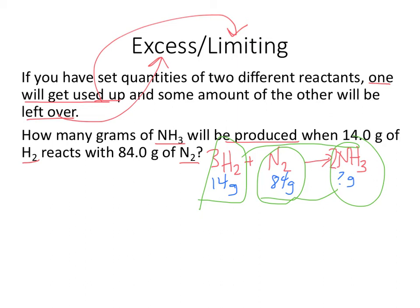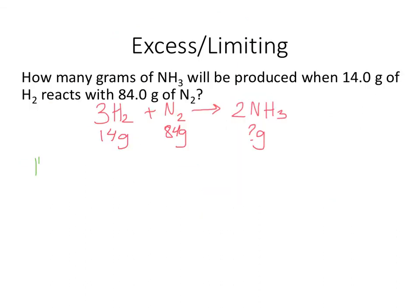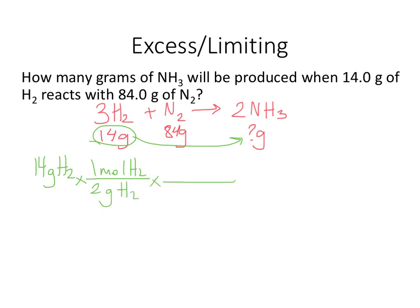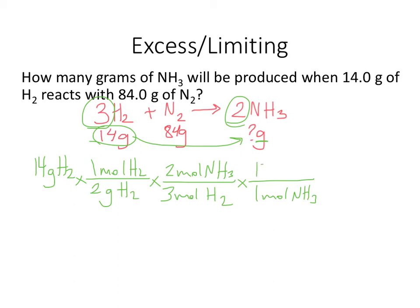Let's start with the first one: 14 grams of hydrogen. We need to figure out how many grams of ammonia will be produced. Since hydrogen is diatomic, it weighs 2 grams per mole. From the balanced equation, 3 moles of hydrogen will produce 2 moles of ammonia. We'd be done except it's asking for grams of ammonia, so we convert: NH3 has a molar mass of 17 grams (nitrogen weighs 14 and three hydrogens weigh 3). Multiplying through, you end up with 79.3 grams of NH3.